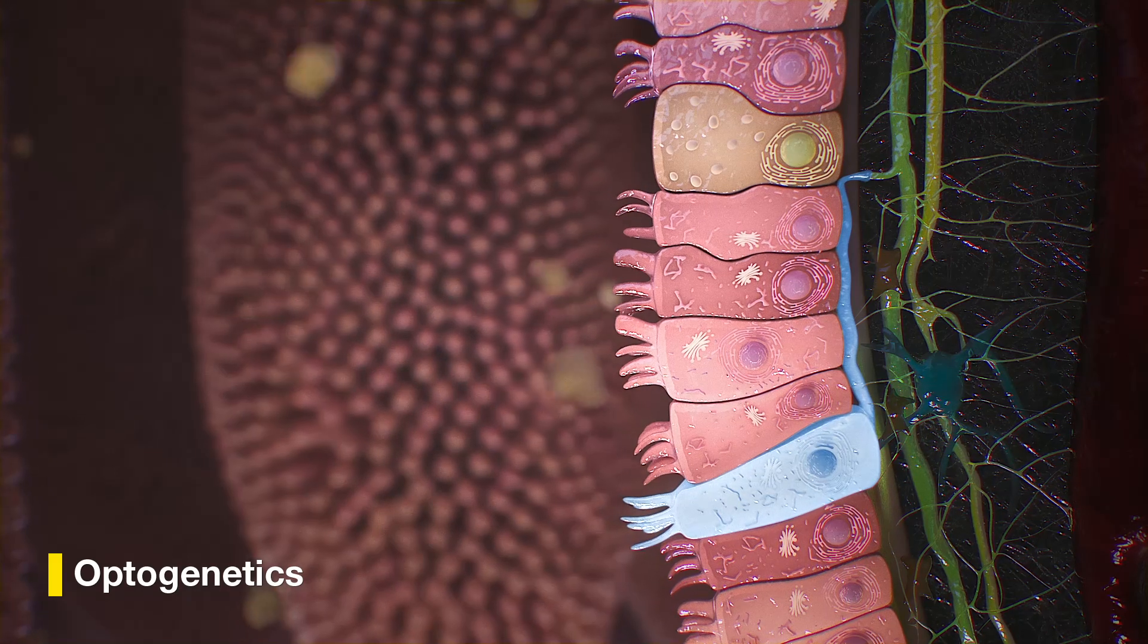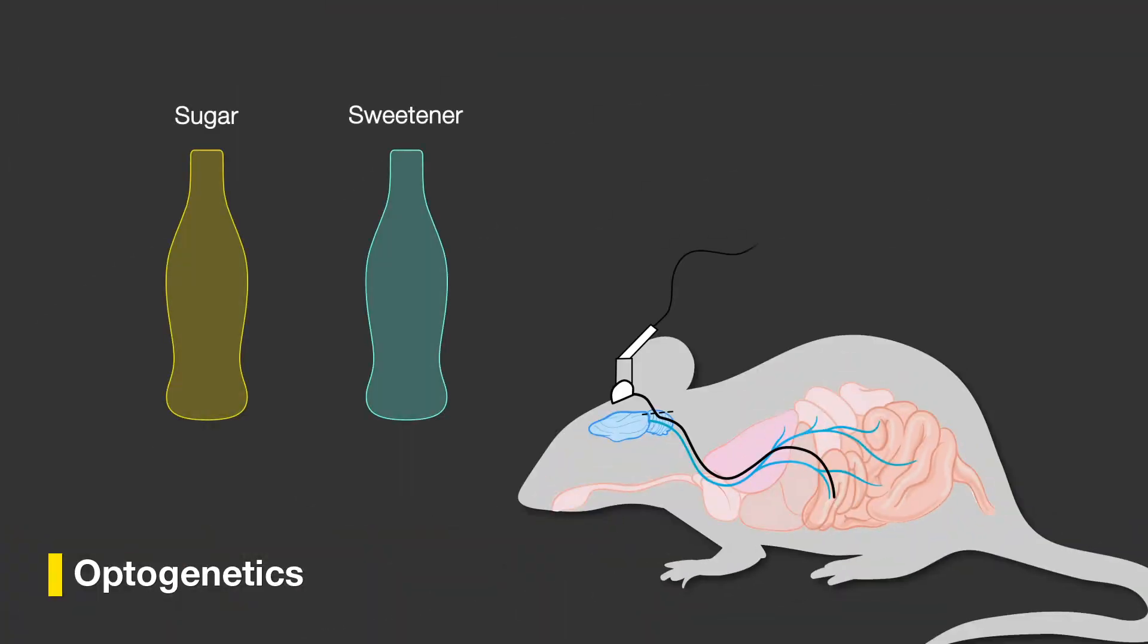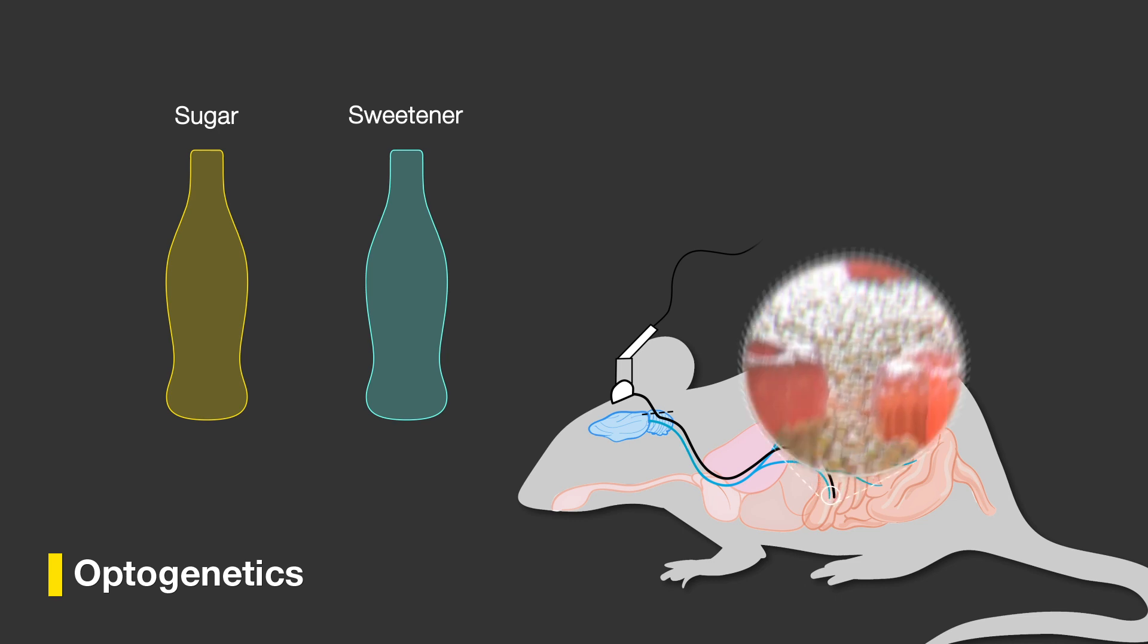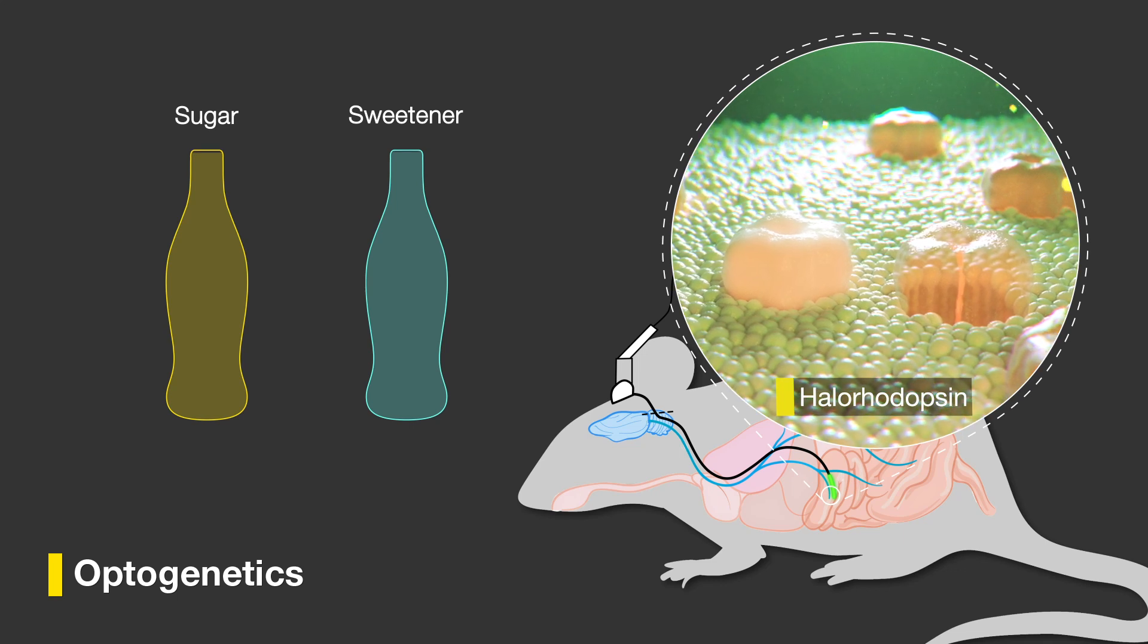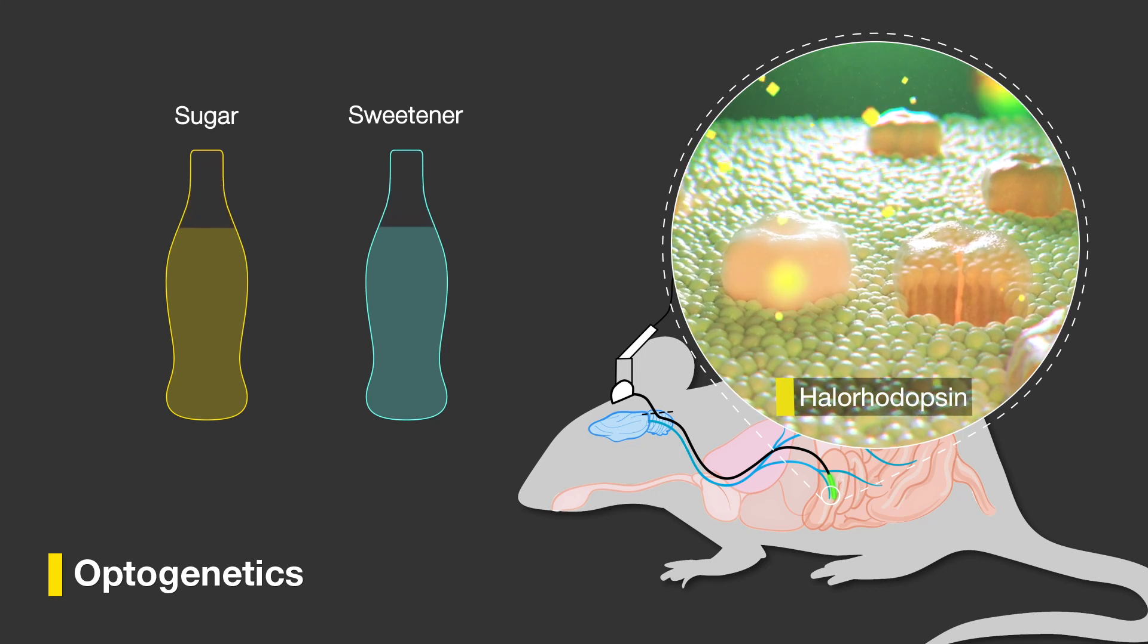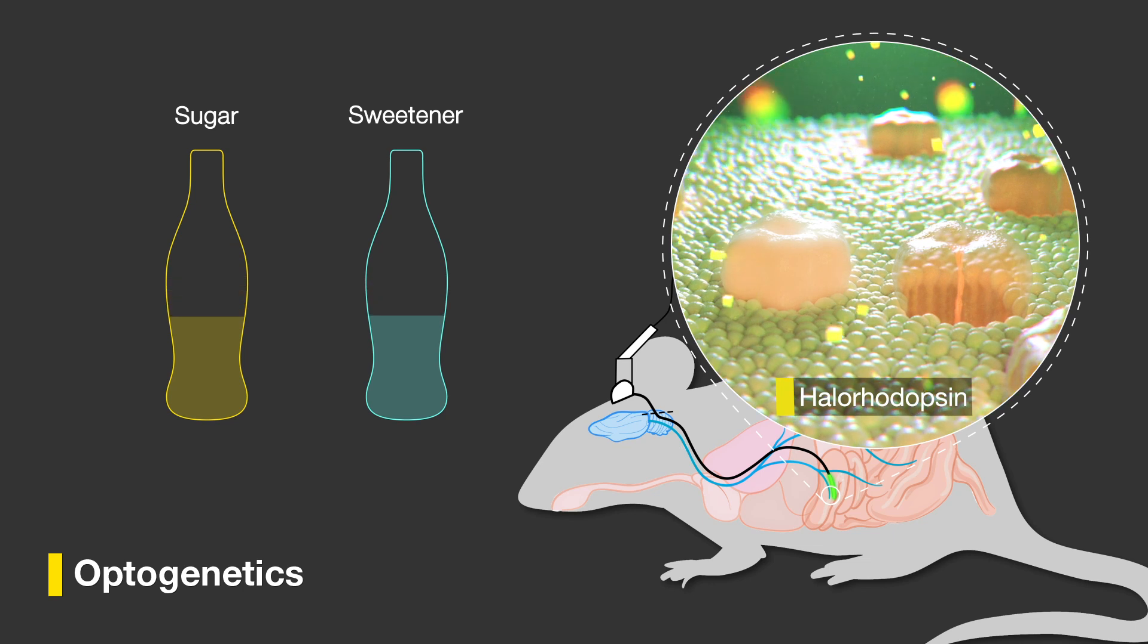This technique allows researchers to silence or excite neuropod cells while a mouse is presented with a choice of sugars versus sweeteners. We discovered that when neuropods are silenced, the mouse cannot distinguish the sugar from the sweetener. It becomes blind to sugar.